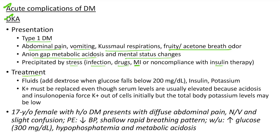For treatment of DKA, we have to give fluids, add dextrose when glucose falls below 200 mg/dL, and give insulin and potassium. In DKA, potassium must be replaced even though serum levels are usually elevated because acidosis and insulinopenia force potassium out of cells initially, but total body potassium levels may be low. Clinical case: A 17-year-old female with history of diabetes mellitus presents with diffuse abdominal pain, nausea and vomiting and slight confusion. Physical examination shows low blood pressure and shallow rapid breathing. Workup shows elevated glucose of around 300 mg/dL, hypophosphatemia and metabolic acidosis — a classic case of DKA.